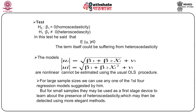Glejser noted that for large sample sizes, any one of the first four regression models can be used. However, in small samples, they may be used as a first-stage device to detect the presence of heteroscedasticity, which may then be confirmed using more elegant methods.